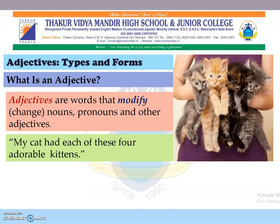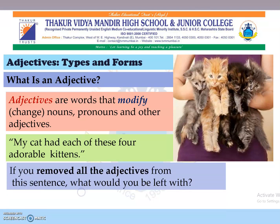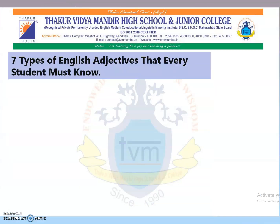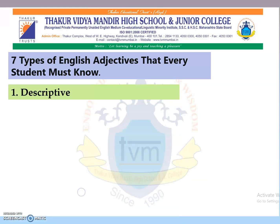My cat had each of these four adorable kittens. If you removed all the adjectives from this sentence, what would you be left with? Cat had kittens. Crazy, isn't it? Yes, and that's the reason why we learn about seven types of English adjectives that every student must know.